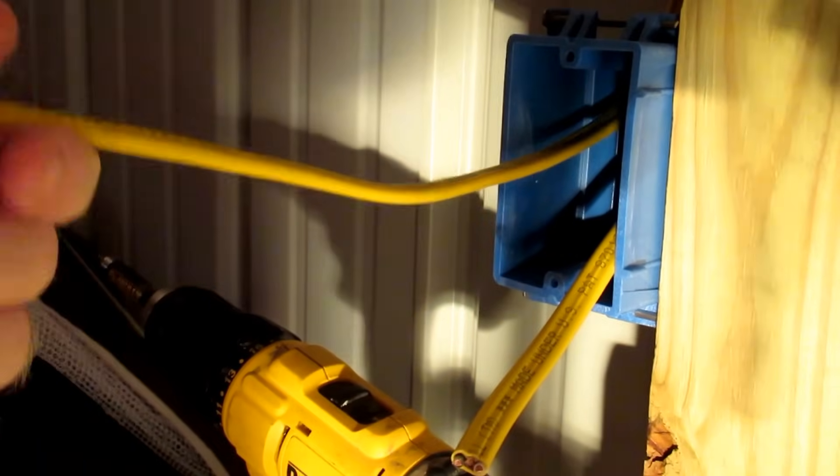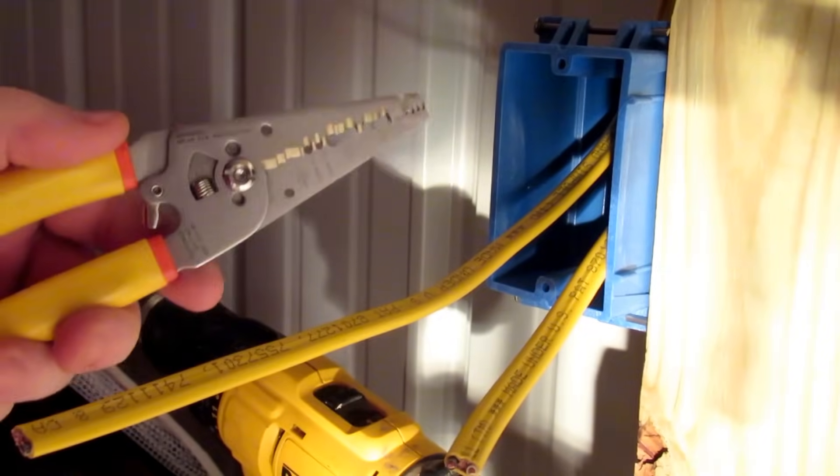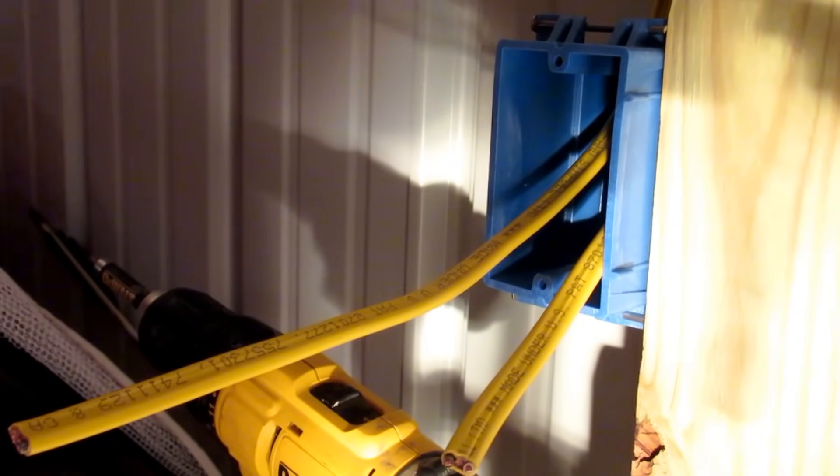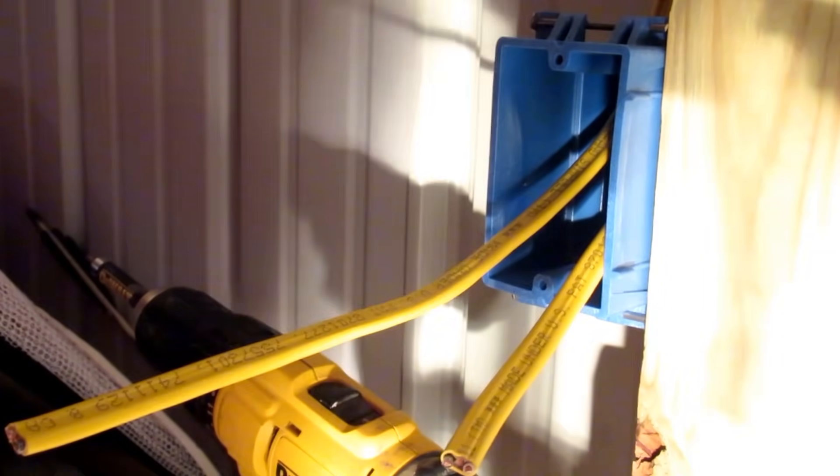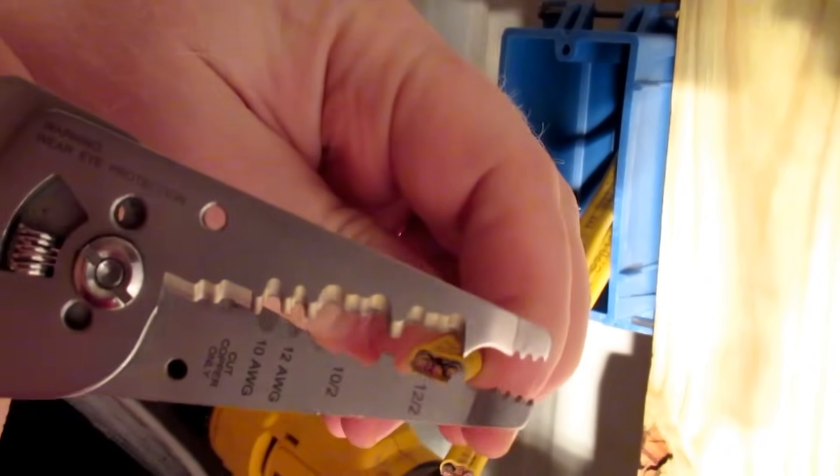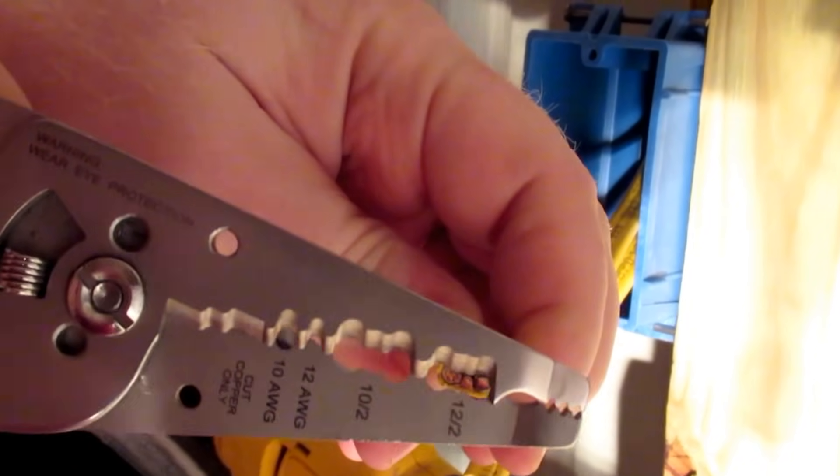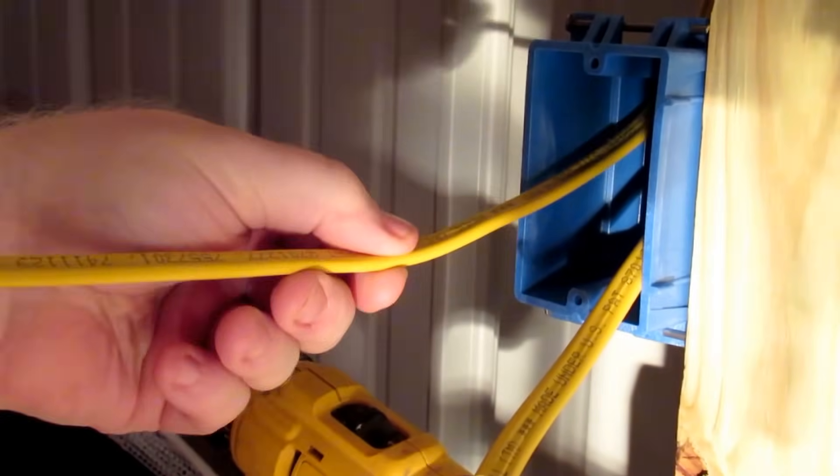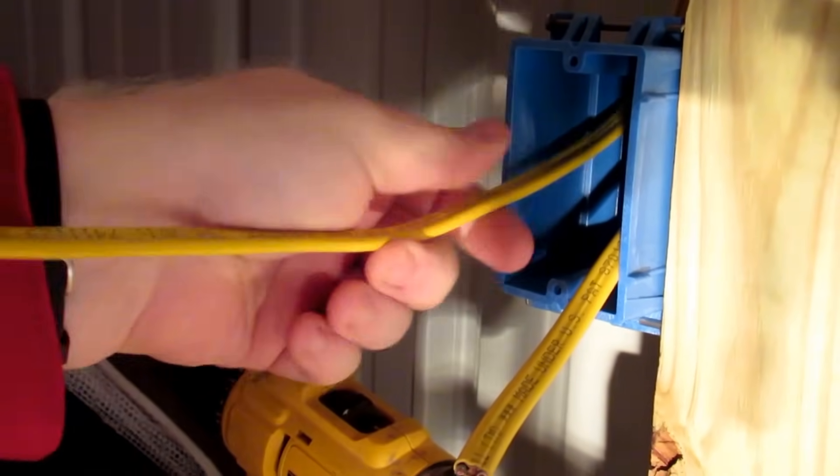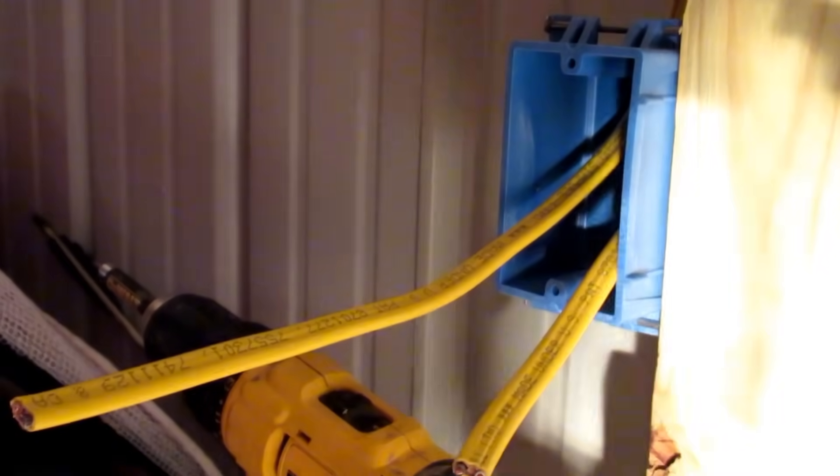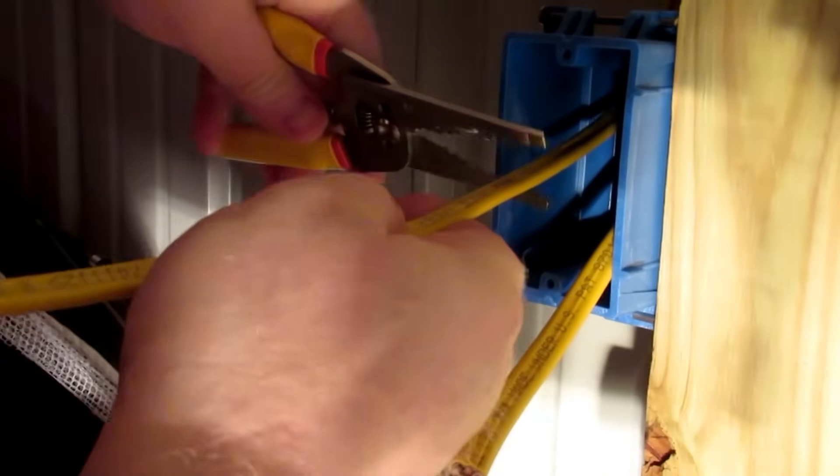There's a couple ways you can do it. You can either take a knife and split it and then pull it back, or you can use a set of Romex strippers like this to score the wire. That's what I'm going to use. The way that these work is the shape of the wire will match the shape of the cutter, and these are designed to cut through the insulation, the outer sheeting of the wire, and let you pull that straight off.